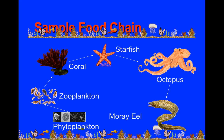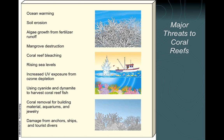Here's a simple food chain for coral reefs. Major threats include ocean warming, soil erosion, and because coral reefs are located near the coastline, fertilizer runoff from agricultural areas can cause problems — causing coral reefs to die or be leached of nutrients.